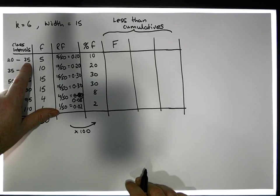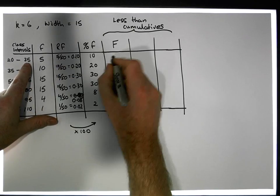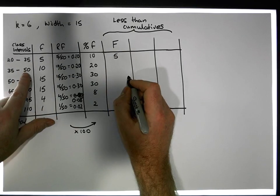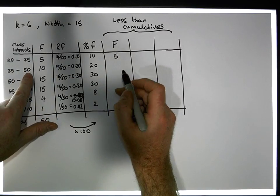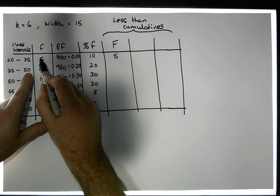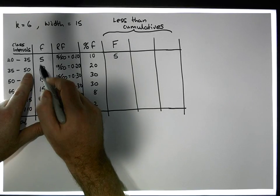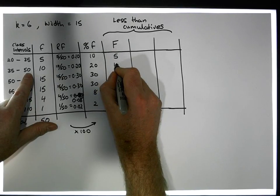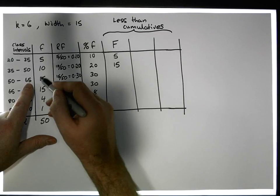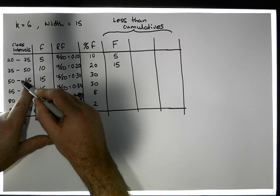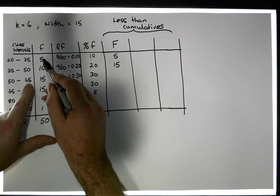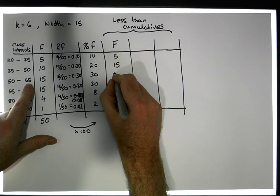How many observations are less than 45? Well, there's 5. How many observations are less than 50? Well, there's 10 in this class and the 5 in the previous class, so there's 15. How many observations are less than 65? There's 15 in that class, 10 in the previous one, and 5 in the one before, which gives us a total of 30.